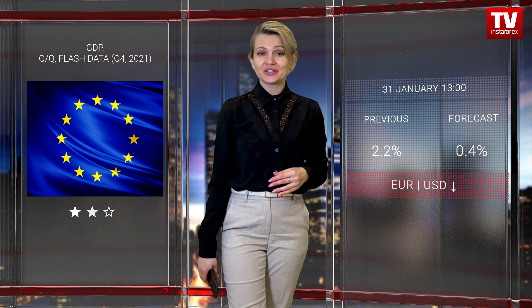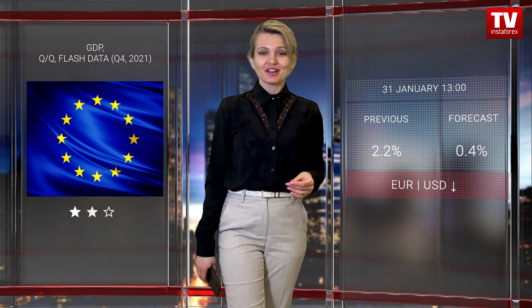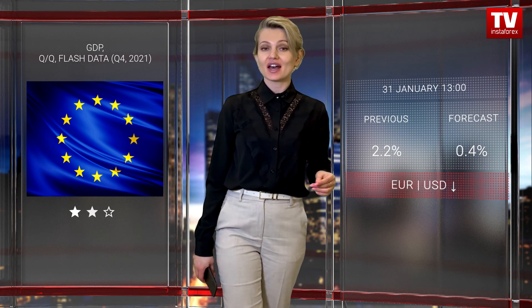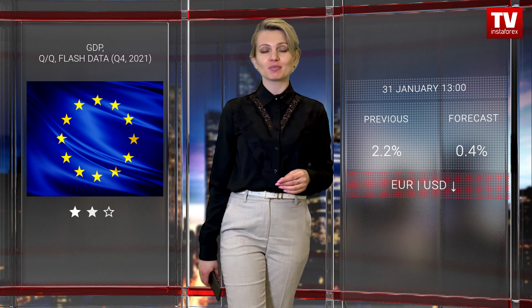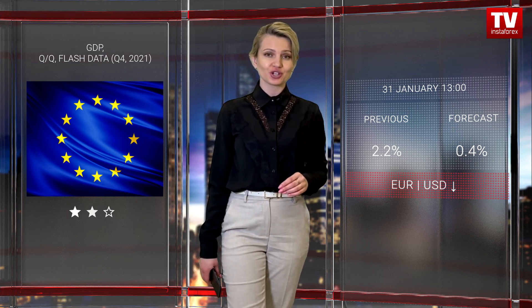Last week, traders learned about faster growth in the US economy. On Monday, they are likely to switch to the eurozone economy, where the situation is the opposite. According to preliminary estimates, the eurozone GDP may slacken. In the fourth quarter of 2021, the eurozone economy expanded by 0.4% after a rise of 2.2% in the previous quarter. High energy prices, inflation, and the unfavorable epidemiological situation have had a negative influence on the economic growth pace.